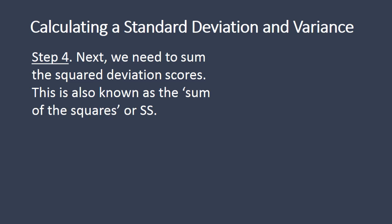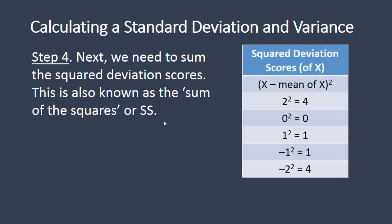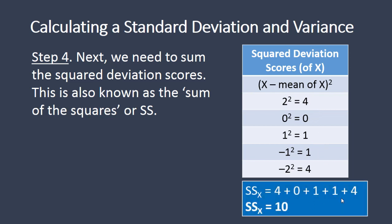Next we need to sum the squared deviation scores. This is also known as the sum of squares, or SS — you'll see this term a lot in statistics texts. All we need to do is add these squared values together: 4 plus 0 plus 1 plus 1 plus 4, which gives us the sum of squares. When we add these together — 5, 6, and 4 — SS equals 10.